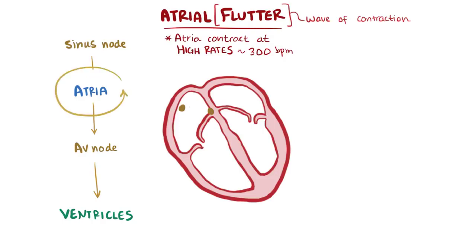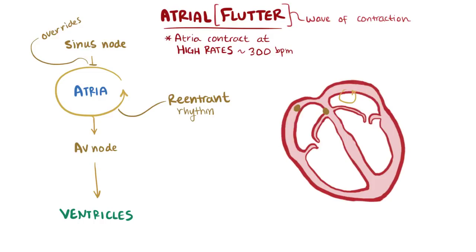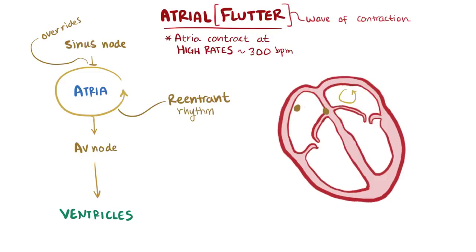With atrial flutter, a reentrant rhythm starts in either the right or the left atrium. Reentrant signals loop back on themselves, overriding the sinus node and setting up an endless cycle that causes the atria to contract again and again at really fast rates.